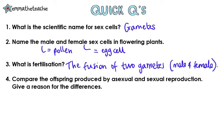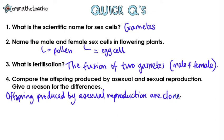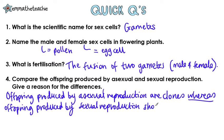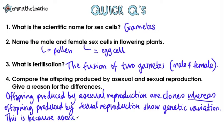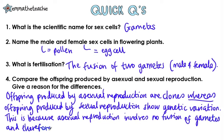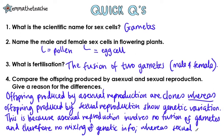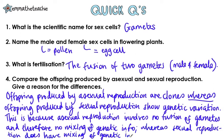Four: Compare the offspring produced by asexual and sexual reproduction, and give a reason for the differences. Offspring produced by asexual reproduction are clones, or you can say they show no genetic variation. Whereas offspring produced by sexual reproduction do show genetic variation. This is because asexual reproduction involves no fusion of gametes, or no fertilization, and therefore no mixing of genetic information. Whereas sexual reproduction has got mixing of genetic information.